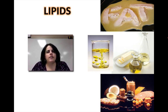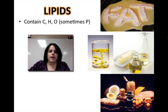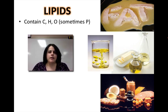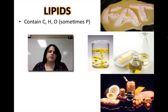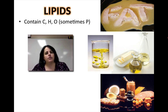Lipids are more commonly known as fats. Of the six elements that make up all the macromolecules, they're only made of three of them: carbon, hydrogen, and oxygen. There is one exception though — there's a group of lipids that are actually made of phosphorus as well, so we'll talk about those in more detail later.